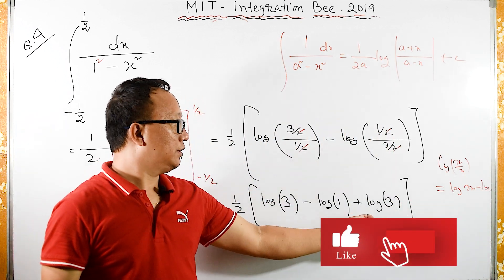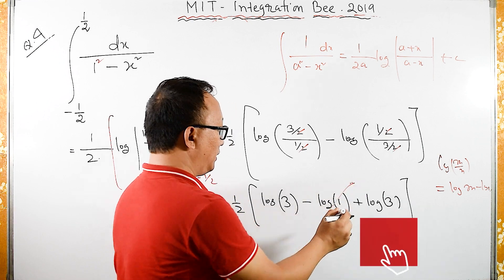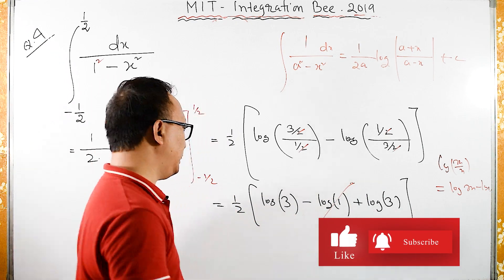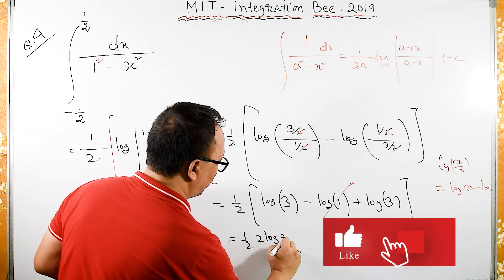Since we have minus minus over here, minus minus plus log 1 is 0. We have log 3 plus log 3 is same as twice log of 3.